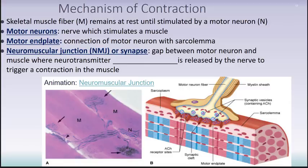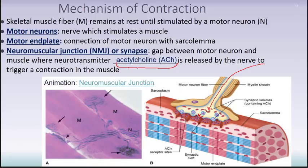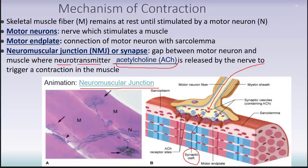At the neuromuscular junction, acetylcholine is released by the nerve. A nerve signal travels down the motor neuron, reaches the terminal end, and stimulates vesicles to travel to the cell surface and release their contents. The contents are acetylcholine, a neurotransmitter. It diffuses rapidly across the synaptic cleft and binds to specific sites on the sarcolemma at the motor end plate, contributing to the muscle's ability to contract.